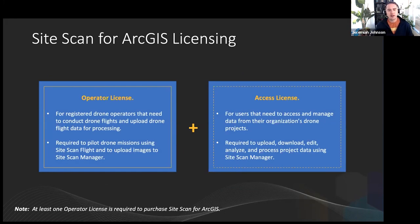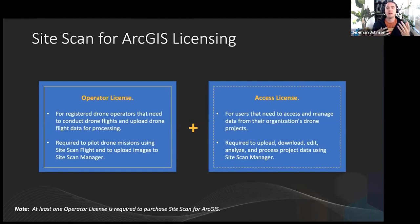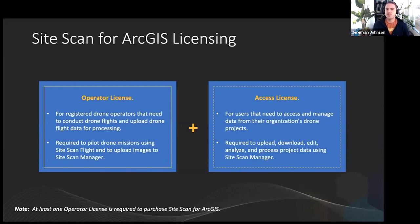The operator license is for flying the drone and uploading data to Manager for processing. It includes unlimited processing and unlimited storage for the subscription term. The access license is for users who are not flying drones but are using the data — tagging ground control points, publishing to ArcGIS Online or Enterprise, or downloading data for use in ArcGIS Pro. It's a significantly cheaper license that allows unlimited use of the cloud product without the ability to upload data for processing.